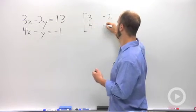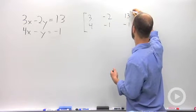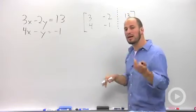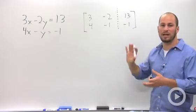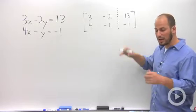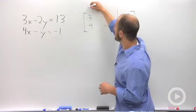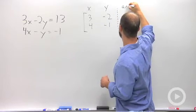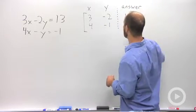Same thing for the second equation, 4, negative 1, negative 1. And typically a dotted or solid line is drawn down the middle to separate our variables from our answers. And really what this is representing is this first column is our x values, our second is our y's, and our third is our answer.